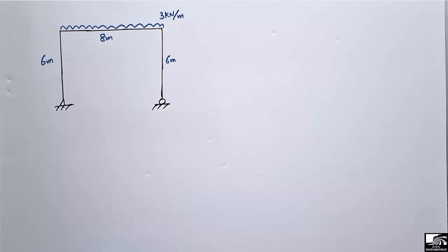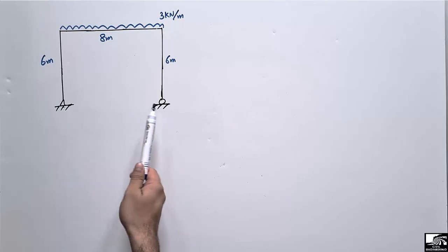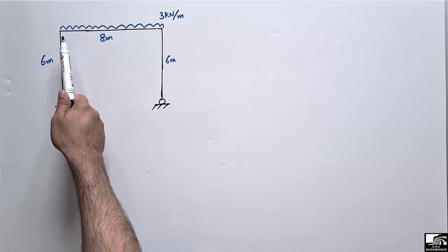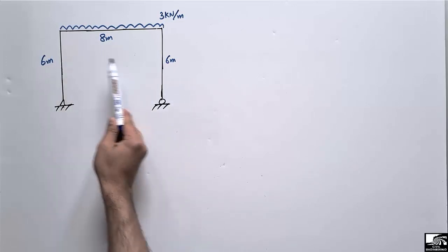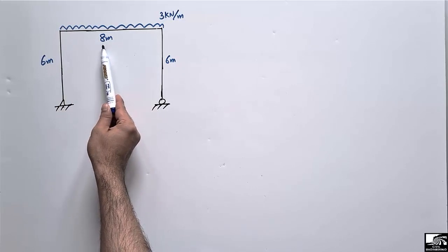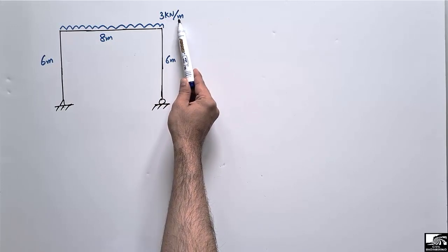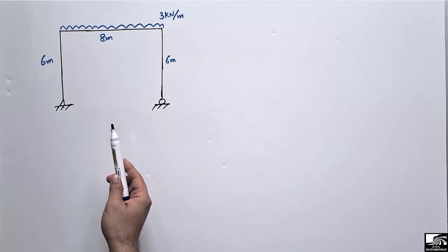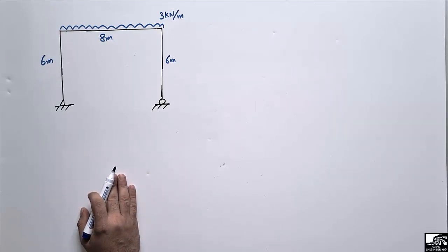Welcome back to 7 Engineering YouTube channel. In today's lecture, we are going to find out the support reactions for this frame and also draw the shear force and bending moment diagram. This frame is composed of one beam and two vertical members known as columns. The column heights are 6 meters each, the beam length is 8 meters, and there is a uniformly distributed load of 3 kN/m acting over the whole length of the beam.